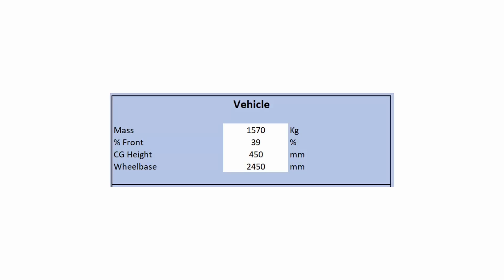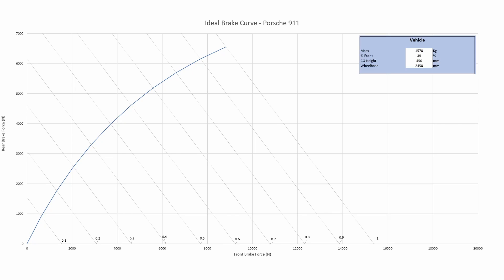Let's look at some real vehicles and see how their ideal brake curves would compare. Let's use a 2022 Porsche 911 and a 2022 Honda Accord. We'll have to make some assumptions about the height of the center of gravity, but all the other parameters are published and easily available. The Porsche 911 is 1,570 kilograms, has a front weight distribution of 39%, an assumed CG height of around 450 mm, and a wheelbase of 2,450 mm. Notice how much more vertical its ideal brake curve is — because the car starts out with so much more rear weight, it takes a lot of weight transfer to unload the rears, and we can get a lot of braking power out of the rear of this car.